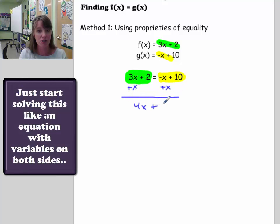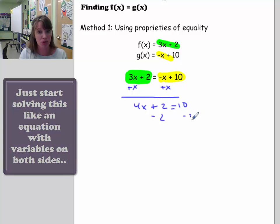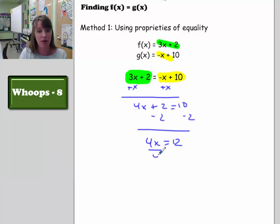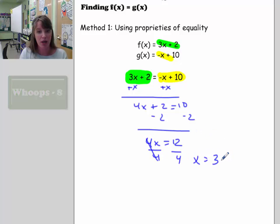So what that means is, what is the x value when both of them are equal, if there's any x value? Sometimes there's not. So here I can add x's to both sides. 4x plus 2 is equal to 10. Subtract 2 from both sides. I'd have 4x is equal to 12. Divide by 4, divide by 4. We'd have x is equal to 3.